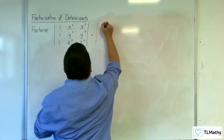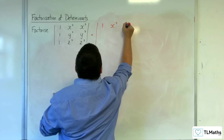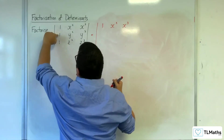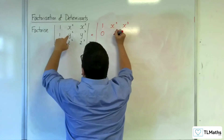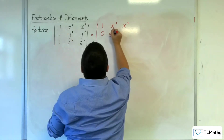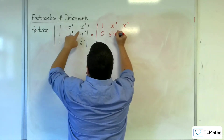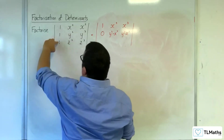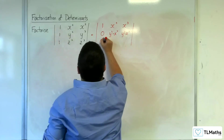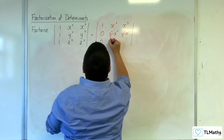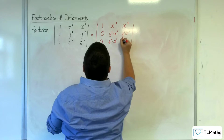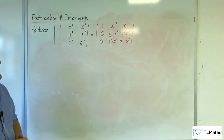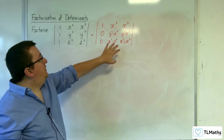The top row will remain as it is. The middle row will have 1 take away 1, so 0; y squared take away x squared; and y cubed take away x cubed. The bottom row: 1 take away 1 is 0; z squared take away x squared; and z cubed take away x cubed. So this is my matrix as it stands now.